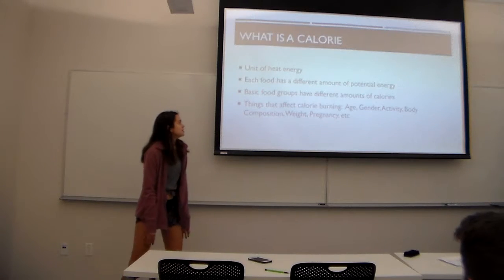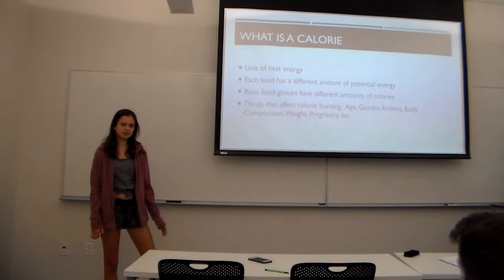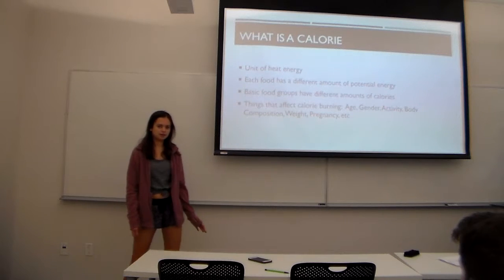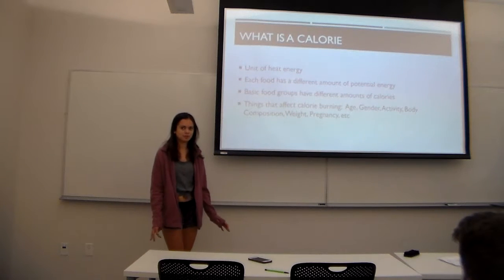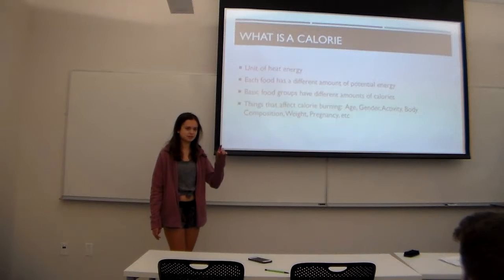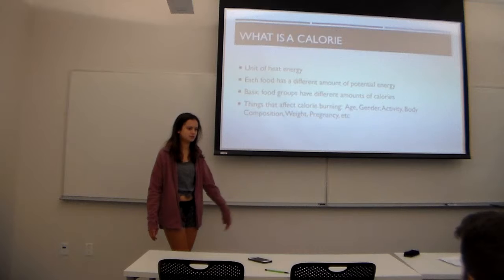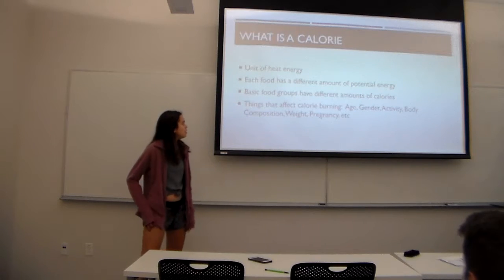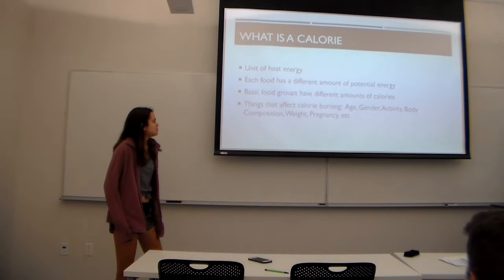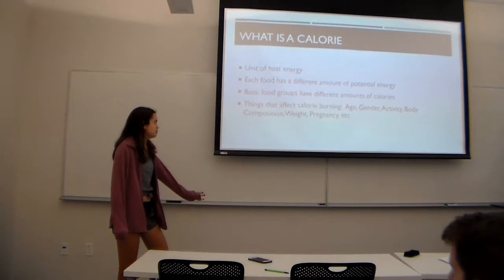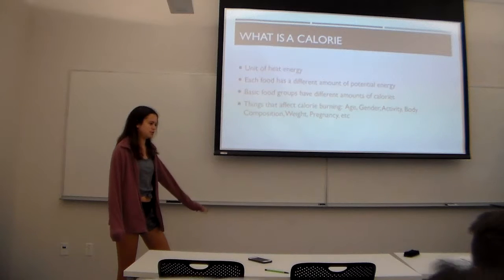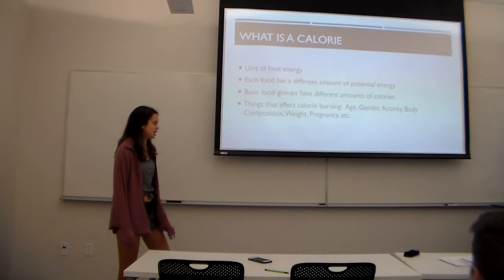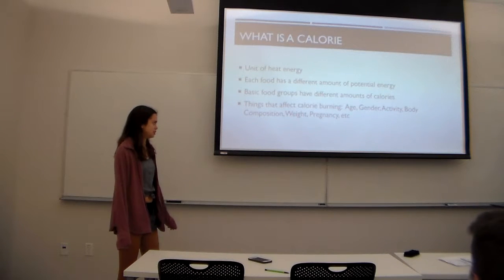So what is a calorie? It's a unit of heat energy — specifically, the amount of energy needed to heat one gram of water one degree Celsius. Each food has a different amount of potential energy. The three basic food groups — proteins, carbs, and fats — each store a different amount of potential energy.